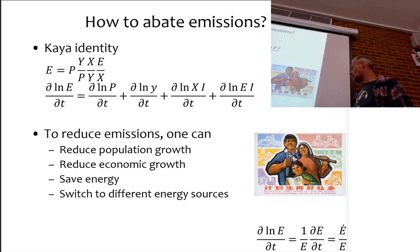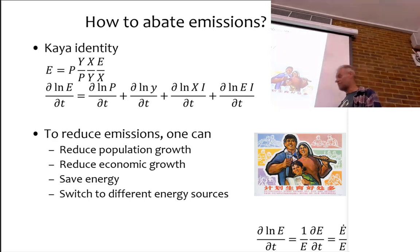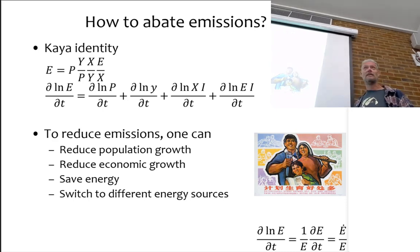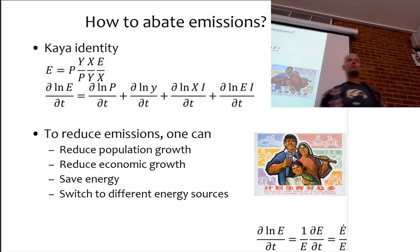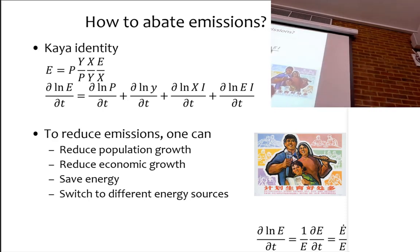The first partial derivative of the natural log of E with respect to T is, by the chain rule, one over E times dE/dt — which is simply the proportional growth rate of emissions. So what this other manifestation of the Kaya identity tells you is that the growth rate of emissions equals the growth rate of population, plus the growth rate of per capita income, plus the growth rate of energy intensity, plus the growth rate of carbon intensity.